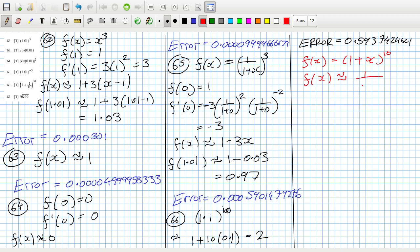So f of x is approximately one... it's one over one plus x power minus 10. This is approximately equal to, oh no it is minus isn't it, one minus 10x.